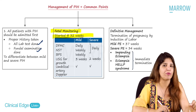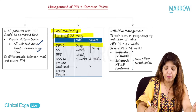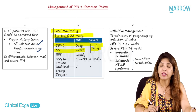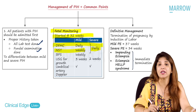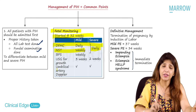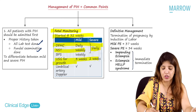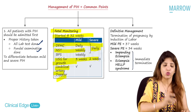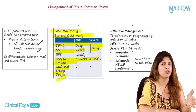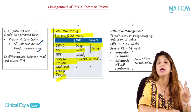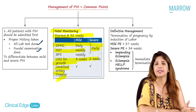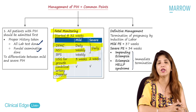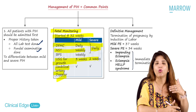Also perform umbilical artery Doppler in PIH patients to assess uteroplacental insufficiency. Termination of pregnancy — meaning induction of labor — is the definitive management: at 37 weeks for mild preeclampsia, at 34 weeks for severe preeclampsia, and immediately for eclampsia, impending eclampsia, or HELLP syndrome. Vaginal delivery is the best method. Antihypertensives are not needed in mild preeclampsia; in severe preeclampsia, give antihypertensives and magnesium sulfate to prevent eclampsia.